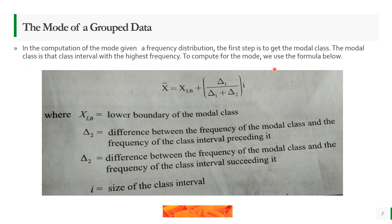To compute the mode, we use the formula. This is the formula: x-mode equals xLB plus delta 1 over delta 1 plus delta 2, times i.